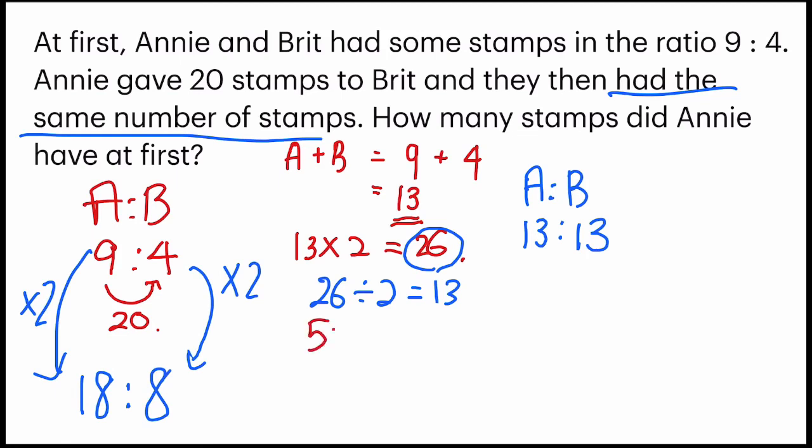So which means 5 units that has been transferred from one person to another person is 20 stamps. And in the question, they want to know how many stamps did Annie have at first. So I'm finding 18 units. Remember to use the new ratio that you have constructed.